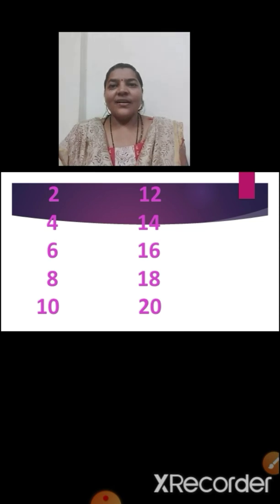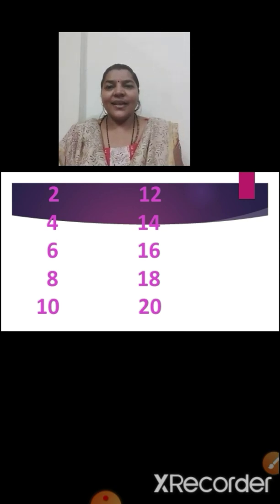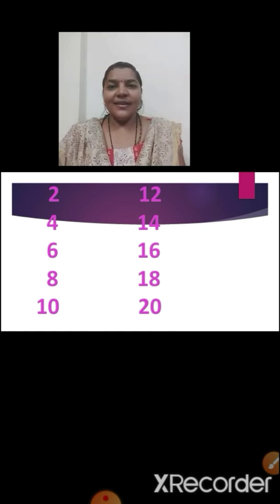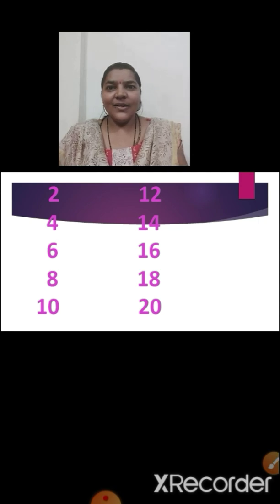Now I will read the groups of two and you are going to repeat after me. Two, Four, Six, Eight, Ten, Twelve, Fourteen, Sixteen, Eighteen, Twenty. You can understand that in every number we have added two.